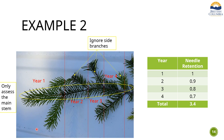Let's do a second example. Year one is always the outermost internode — it looks perfectly healthy, no defoliation, so I give it a one. Year two looks pretty good, maybe a needle or two missing — I'm going to give it 0.9, or 90% needle retention. Year three also looks quite good, maybe only a couple needles missing — I'm going to give it 0.8. And then the fourth internode has a few needles missing but that's it — I'm going to give it 0.7. I add it all up and I end up with a 3.4 score. I only look at the four most recent internodes.